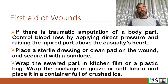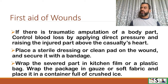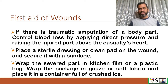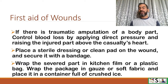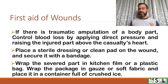If there is traumatic amputation and a body part has been cut and separated, control blood loss by applying direct pressure and raising the injured part above heart level. Place a sterile dressing or clean pad over the wound and secure it. Wrap the severed part in kitchen film or a plastic bag, then wrap the package in gauze or soft fabric and place it in a container full of crushed ice.